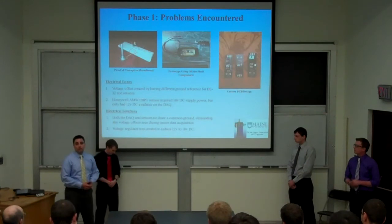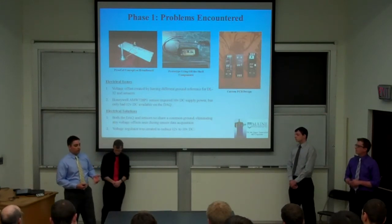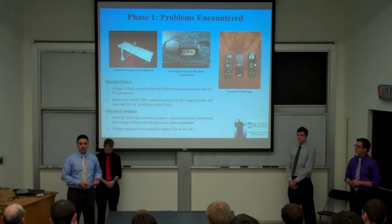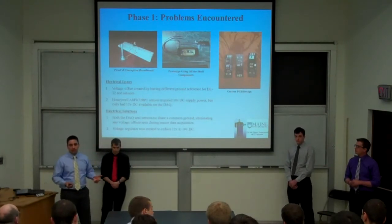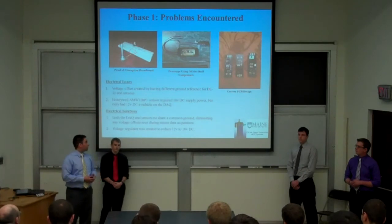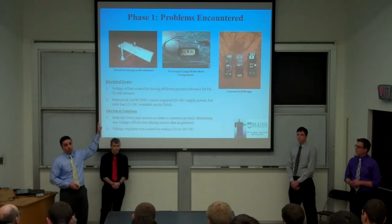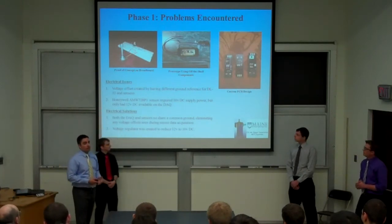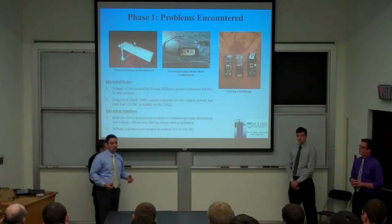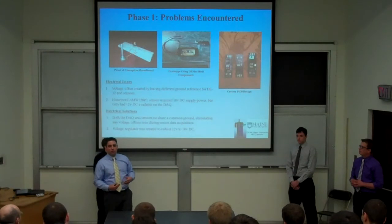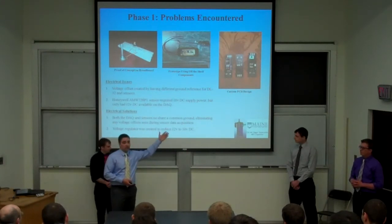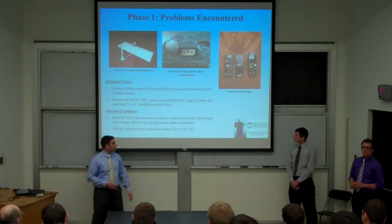One problem we encountered during phase one was that our flow sensor needed a 10-volt power supply, and we only had 12 volts readily available on the DAQ. We needed to make a simple voltage regulator circuit. We first proved it out on a breadboard, then used off-the-shelf components from Radio Shack to build a functional prototype. We then decided we wanted a more compact, reliable design, so we made a custom printed circuit board, which you can see on the right.